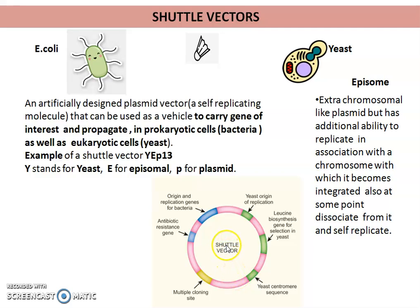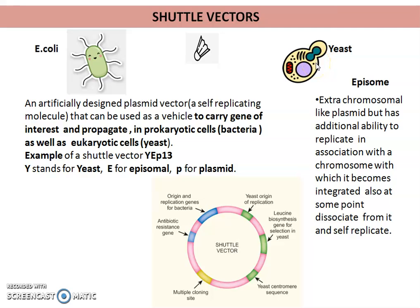Normally, till now, vectors we discussed were artificially designed to deliver a gene in only one particular cell type. But shuttle vectors can be used to deliver a gene of interest and make it propagate into different organisms. We are going to talk about shuttle vector YEP13 — Yeast Episomal Plasmid. This shuttle vector can be used as a cloning vector in E. coli, a prokaryote, as well as in a eukaryote, that is a yeast cell.